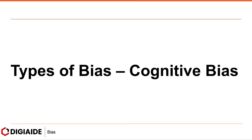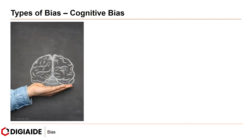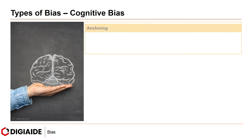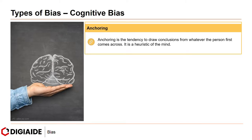Moving on to types of bias, starting with the first one: cognitive bias. A cognitive bias is when the ability to assess or judge something gets skewed, leading the person to draw faulty conclusions. The types of cognitive bias include, first, anchoring. Anchoring is the tendency to draw conclusions from whatever the person first comes across — it is the heuristic of the mind.